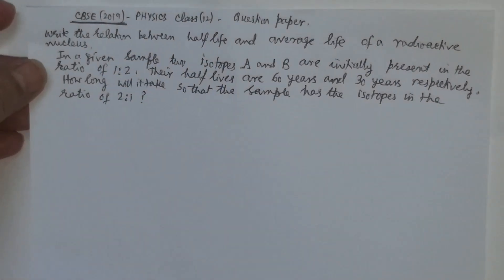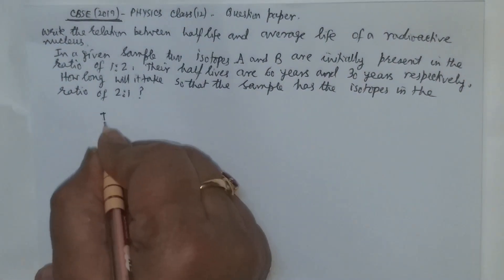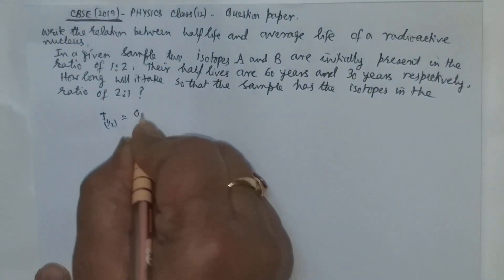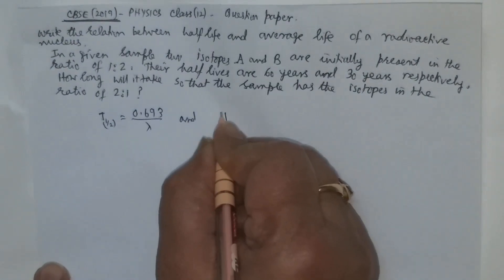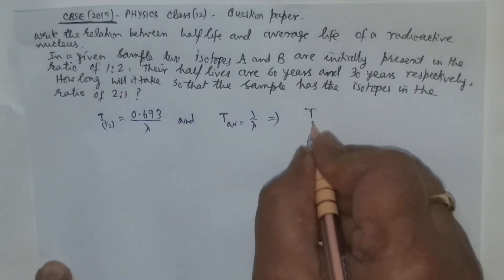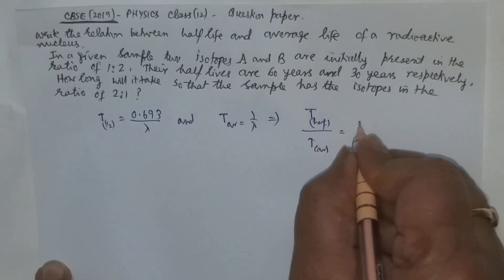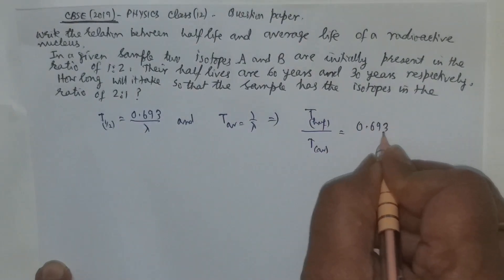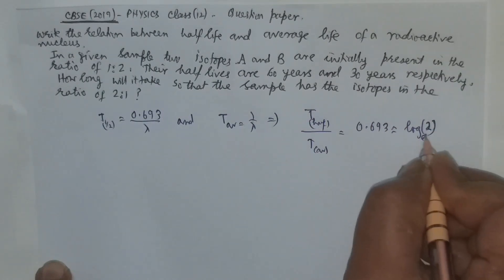The next question: write the relation between half life and the average life of a radioactive sample. The half life is 0.693 divided by lambda and the average life is 1 by lambda. So if you divide t half by t average it equals 0.693 or you can take it to be log 2.